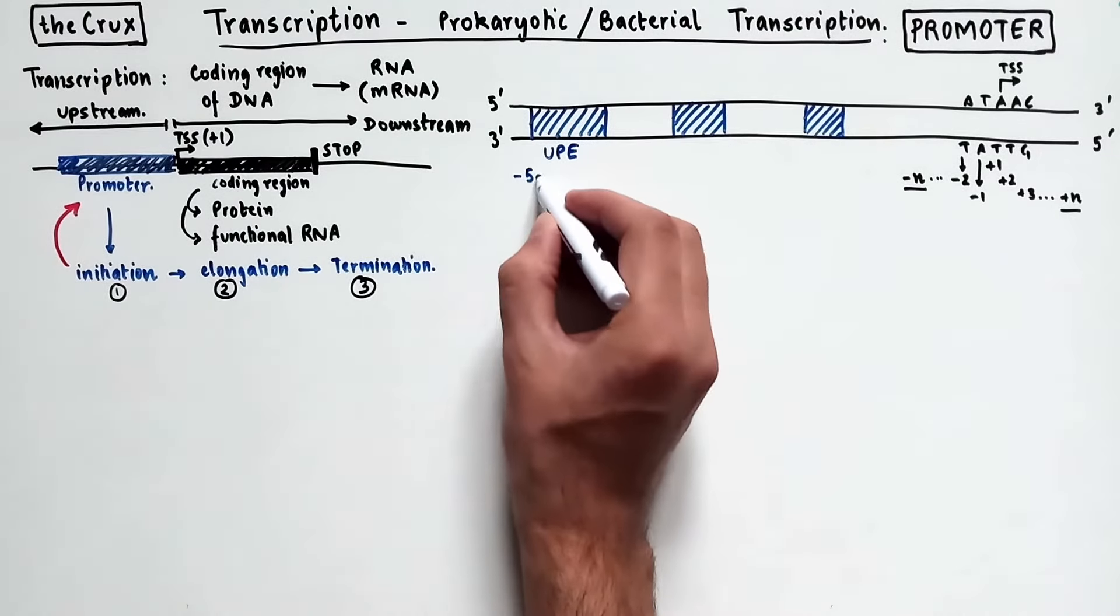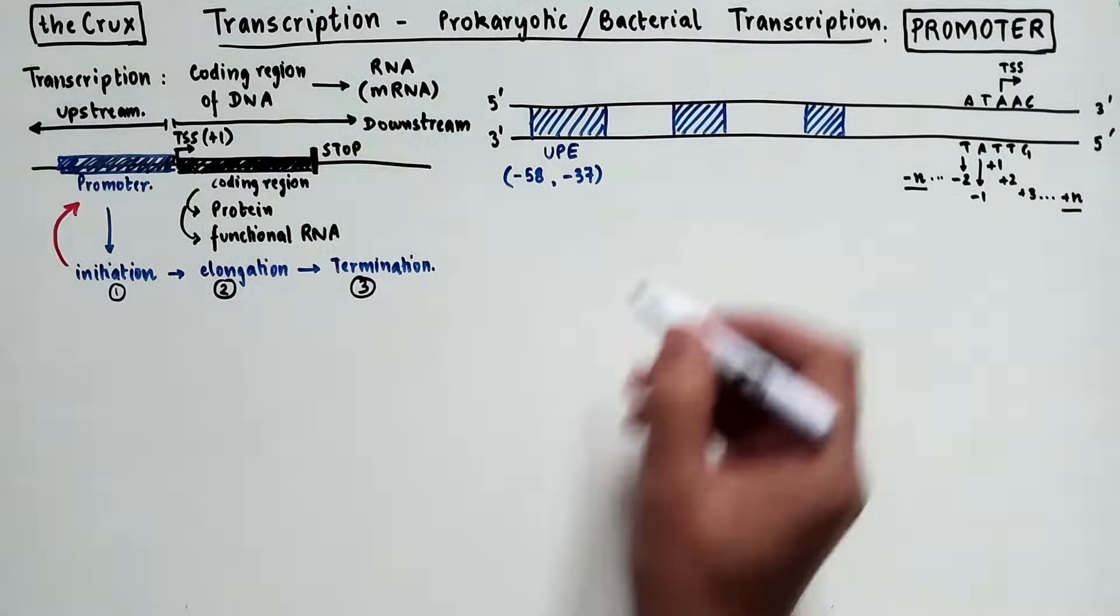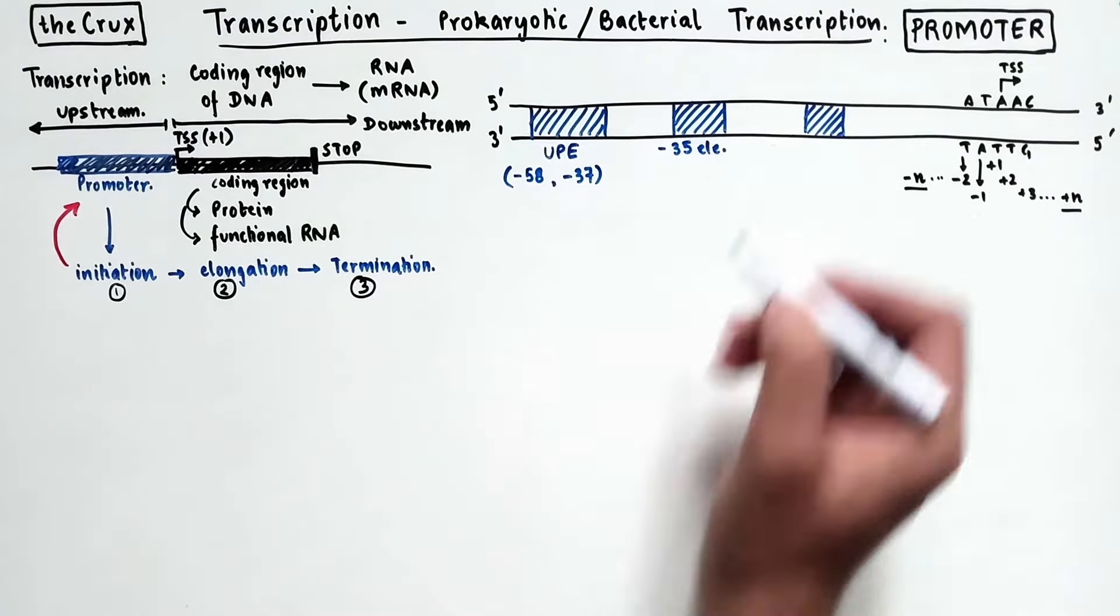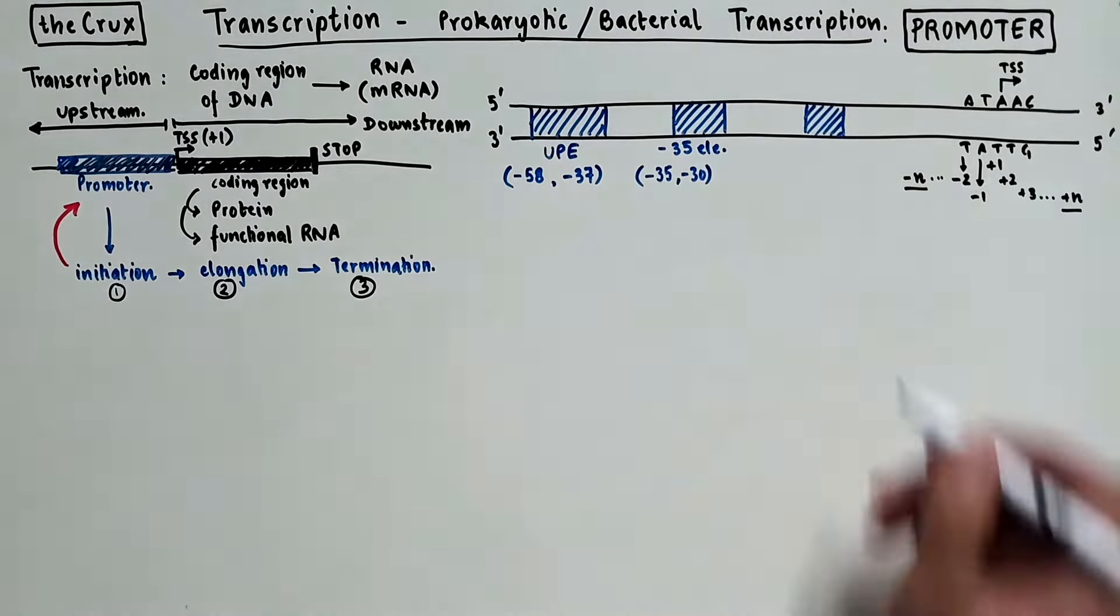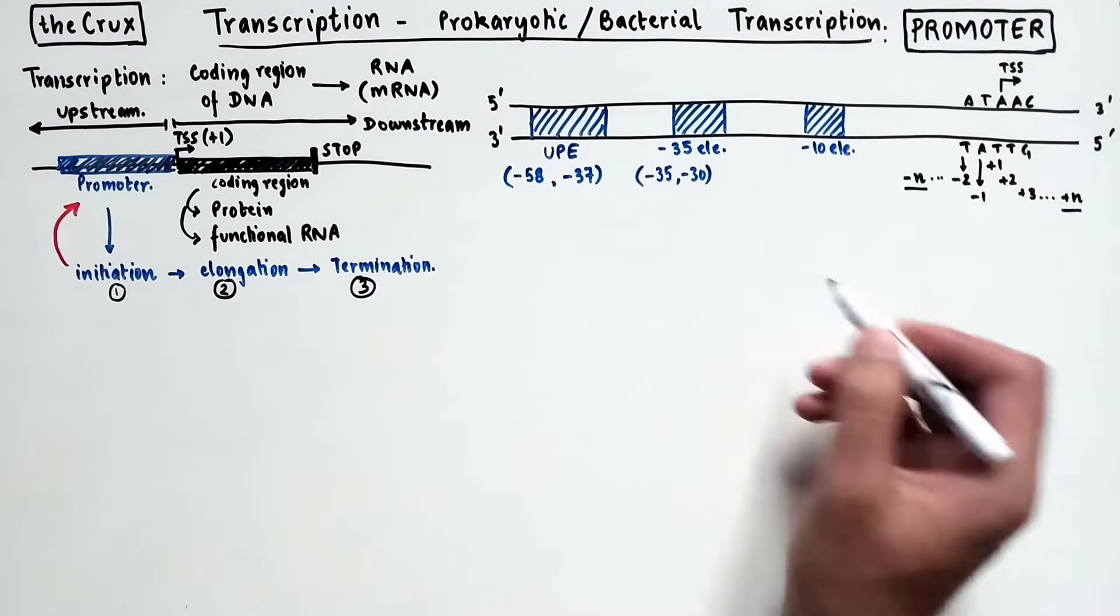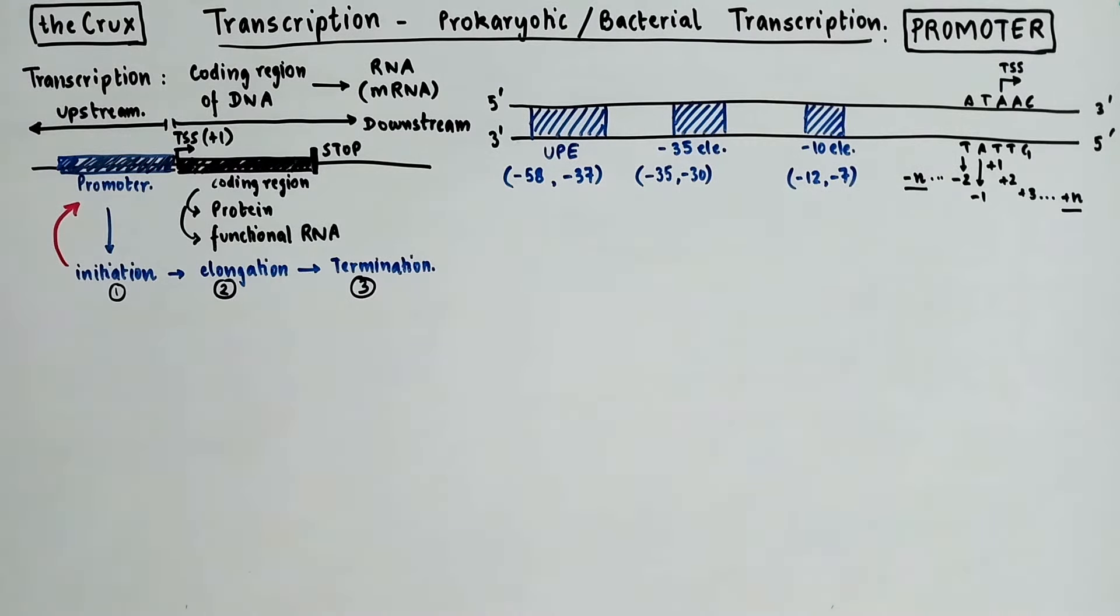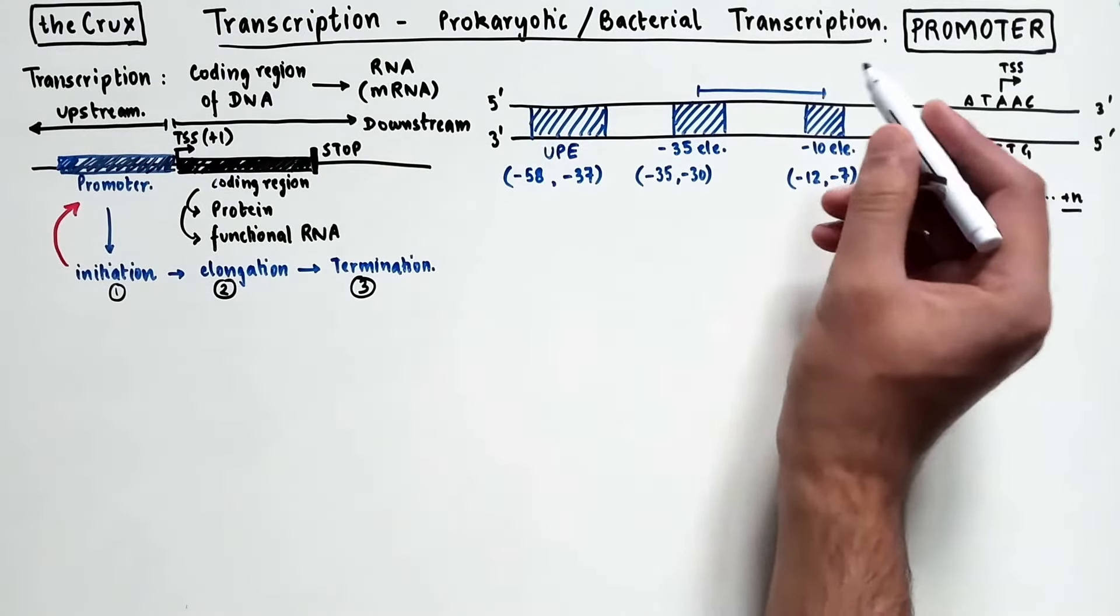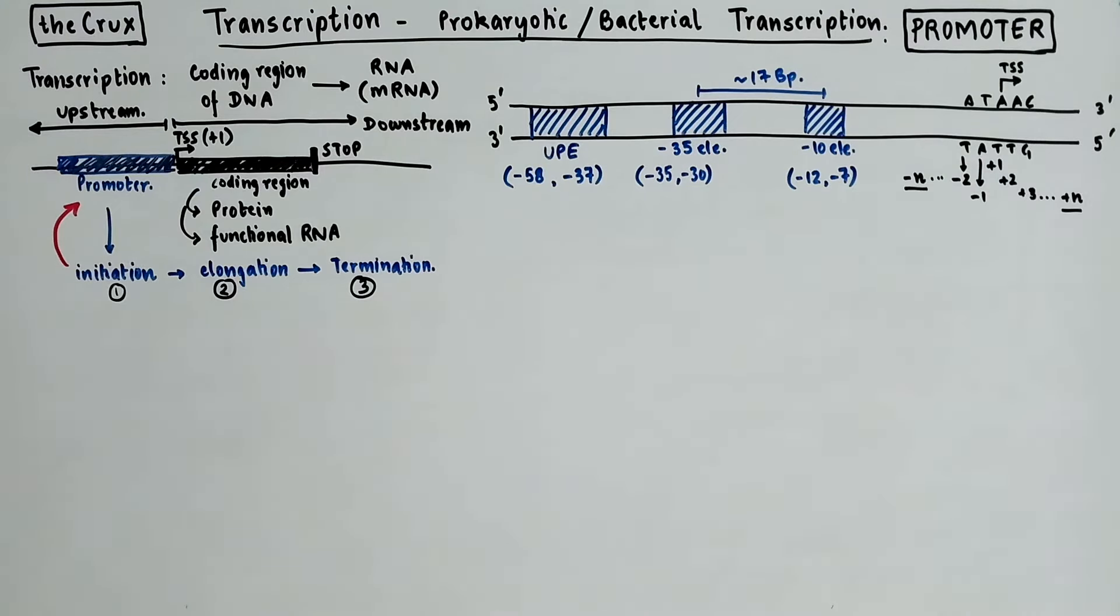Then we have the negative 35 element, which is located at around negative 35 to negative 30 position. Then you have the most common promoter element, the negative 10 element, located at the negative 12th to negative 7th position. It is also known that the optimal spacing between the negative 35 and the negative 10 element is around 17 bases.